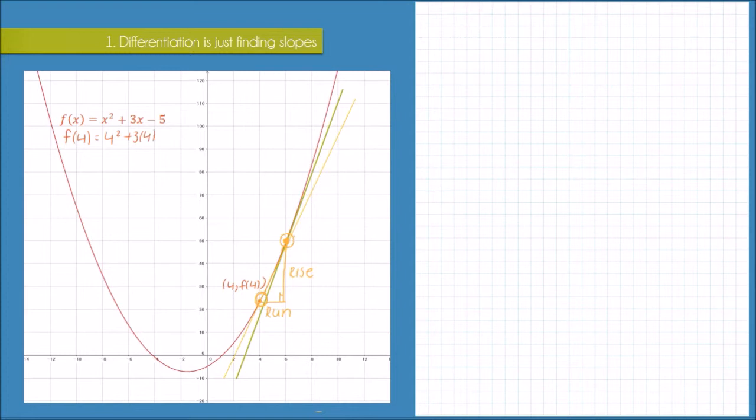The higher up point here is going to be 6 comma f(6), and f(6) will be 6² plus 3 times 6 minus 5, which is 49.